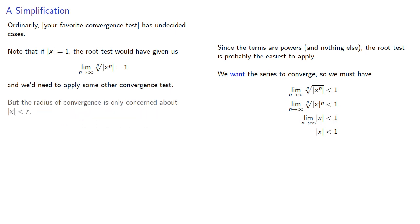But the radius of convergence is only concerned about x values where the absolute value is less than r. And what that means is that for any actual value of x, any equalities become inequalities. So we don't really need to worry about these undecided cases, at least not yet.